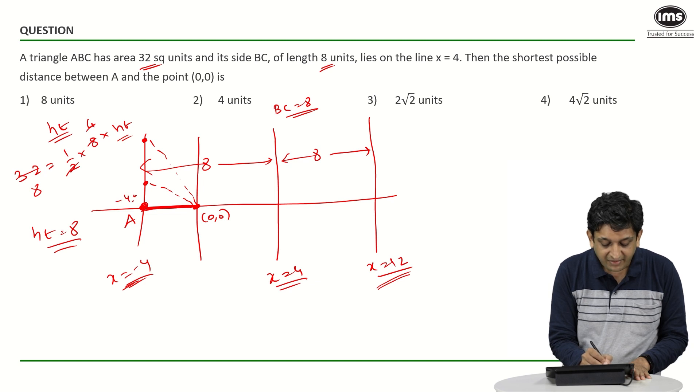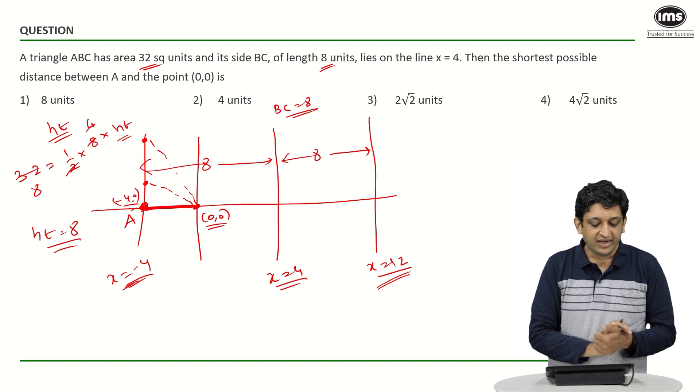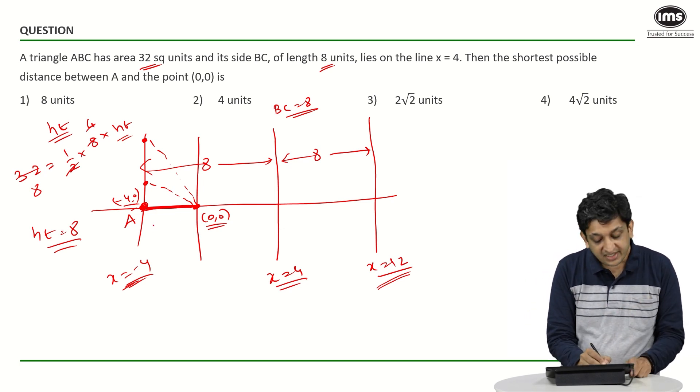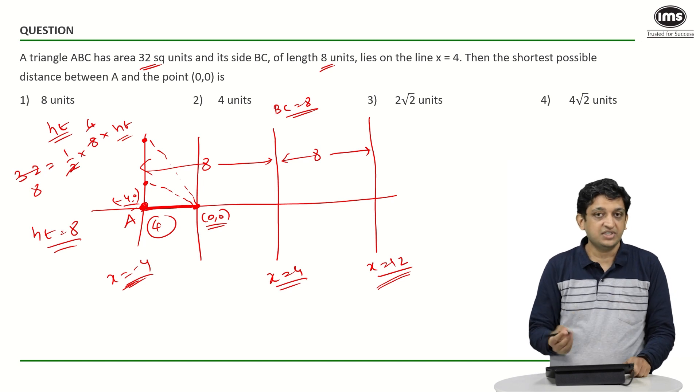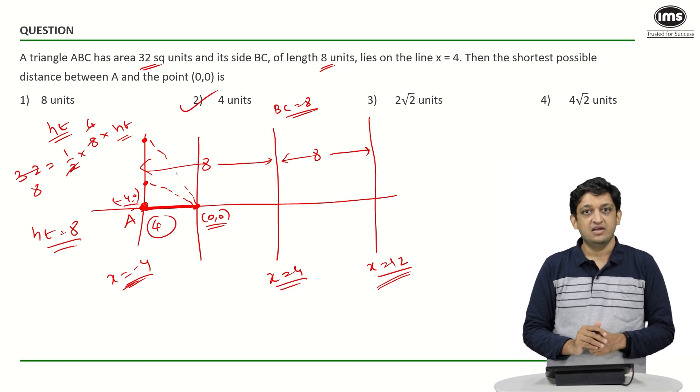The distance between these two points will be (-4,0) and (0,0), so the x coordinate is minus 4, y coordinate is 0, and the origin. At what distance is A from the origin? It is basically 4 units, so the correct answer to this question is going to be option 2, that is 4 units.